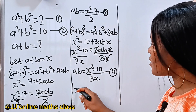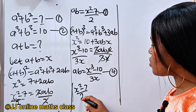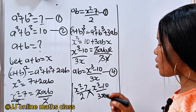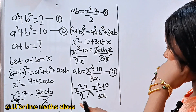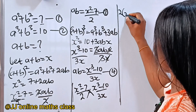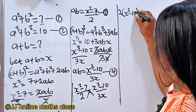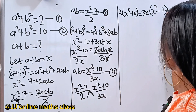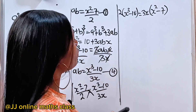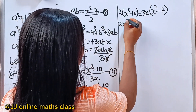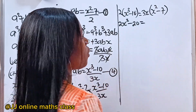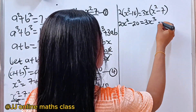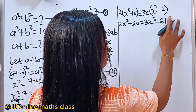Now let's cross multiply. We have 2 times bracket x to the power of 3 minus 10 is equal to 3x times bracket x squared minus 7. Expanding: 2x cubed minus 20 is equal to 3x cubed minus 21x.